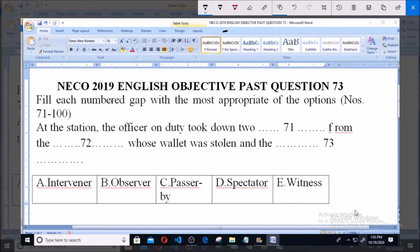The question says: At the station, the officer on duty took down two statements, as we have answered in question number 71, from the complainant, as we have answered in question number 72, whose wallet was stolen and the dash.